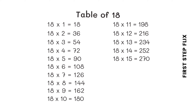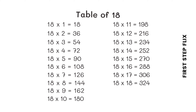18 fifteens are 270. 18 sixteens are 288. 18 seventeens are 306. 18 eighteens are 324. 18 nineteens are 342. 18 twenties are 360.